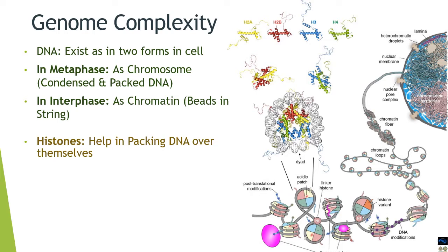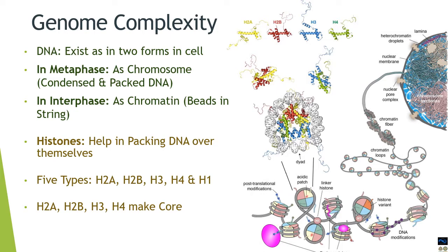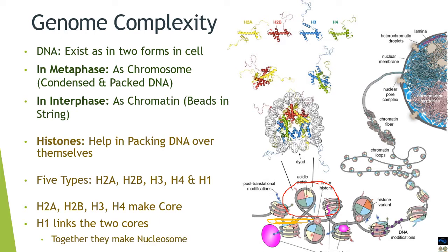Histones are the part over which the DNA packages itself, and there are five types of histones: H2A, H2B, H3, H4, and H1. H2A, H2B, H3, and H4 make the central core over which the DNA winds itself, as you can see in the diagram on the right-hand side. H1 is the part which links the two cores together, binding to the linker DNA and associating two nucleosomes with each other. Together, all these make the nucleosome.